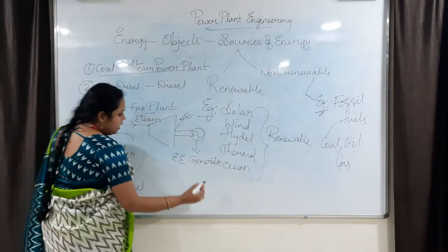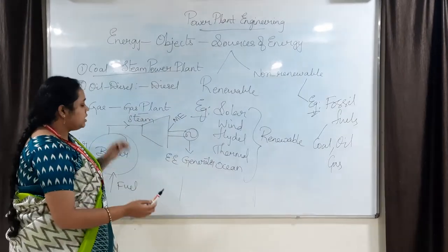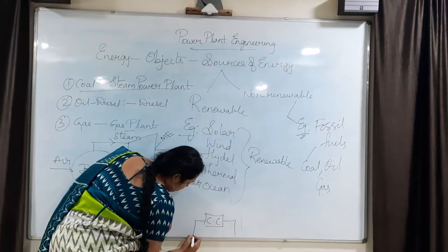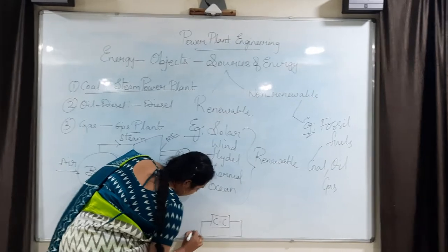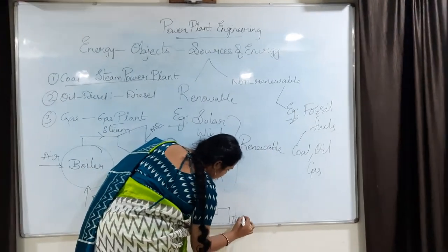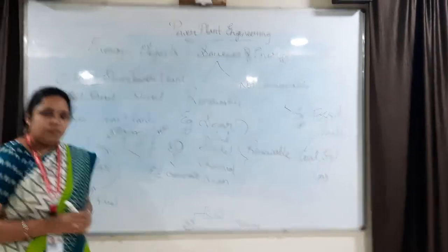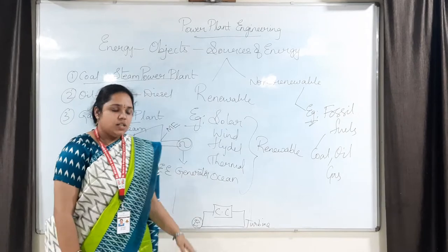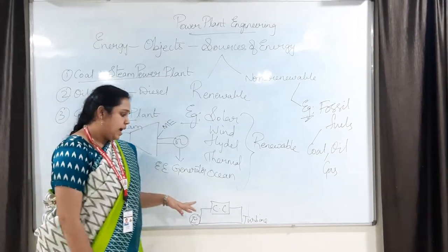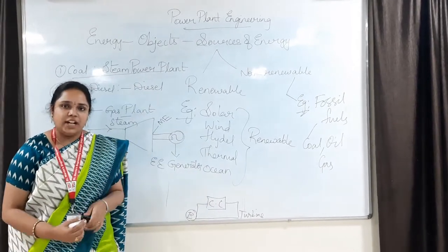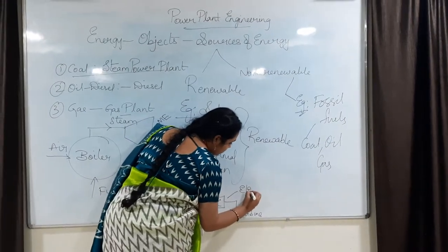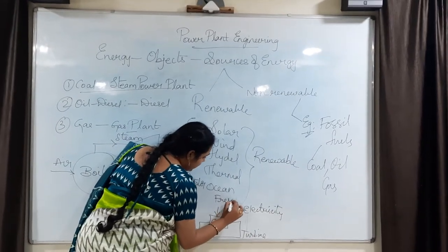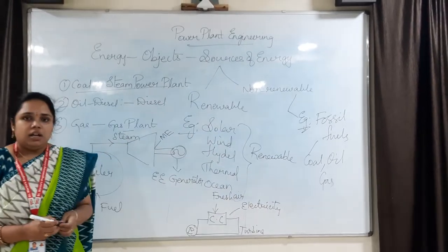Now let's see about the gas plant. In the gas plant, it is similar to the diesel plant and steam power plant, with one difference — that is the combustion chamber, which will be in between the boiler and turbine. In the gas plant, the gas is directly expanded in the turbine. The main requirement of the gas plant is that we need to supply fresh gas all the time so that we will be getting electricity properly. If we do not supply fresh fuel and air, the power plant may not work to our satisfaction.